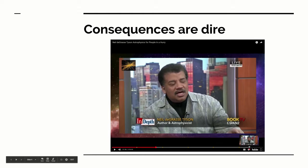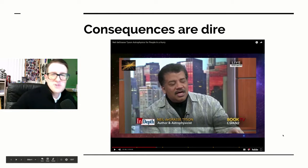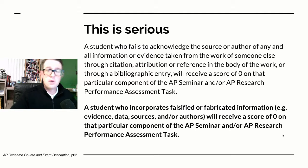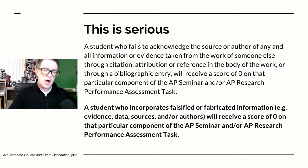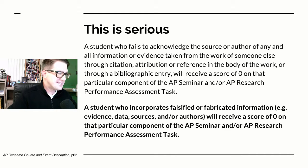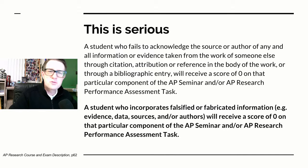Obviously he's talking about science, but this applies almost anywhere in academic research. This comes from the College Board — I've shown you this slide many times. We've focused on the top paragraph about plagiarism, but the bottom paragraph is the new focus: a student who incorporates falsified or fabricated information — evidence, data, sources, or authors — will receive a score of zero on that component of the AP Seminar or AP Research performance assessment task.